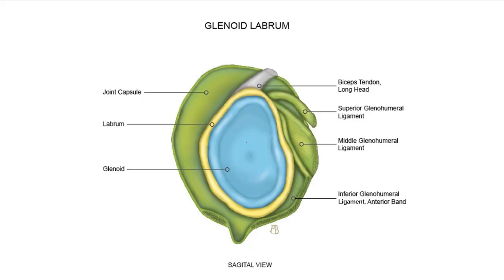I want to talk about some weird idiosyncrasies of SLAP lesions. We've got our pear-shaped glenoid cup in blue with a little bare area here in the center. Here are some key structures anteriorly: the superior and middle glenohumeral ligament. The middle glenohumeral ligament is the most variable, the superior glenohumeral ligament is the smallest, and the largest and most consistent GHL is the IGHL with its anterior band, axillary band, and posterior band.